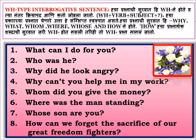The third example is 'Why did he look angry?' The fourth is 'Why can't you help me in my work?' The fifth is 'Whom did you give the money?' In this sentence, 'did' is the helping verb which tells us the tense — 'did' suggests the sentence is in simple past tense. After adding 'did', there is no need to add the V2 form of the main verb.